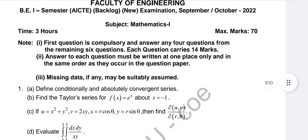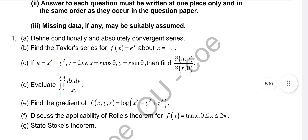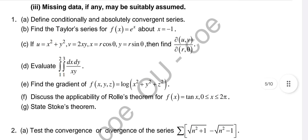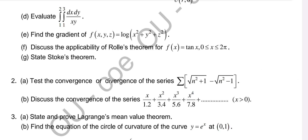For the September/October 2022 paper: define conditional and absolute convergence of a series. As mentioned, learn the definitions and statements for the P-test, auxiliary geometric test, comparison test, D'Alembert's ratio test, Raabe's test, Cauchy's nth root test, and logarithmic and alternating series tests — he will ask these for two marks. Then Taylor series expansion for one variable, partial derivative problem, evaluation of double integral, and from vector calculus: Rolle's theorem and Stokes' theorem — two problems from vector calculus again.